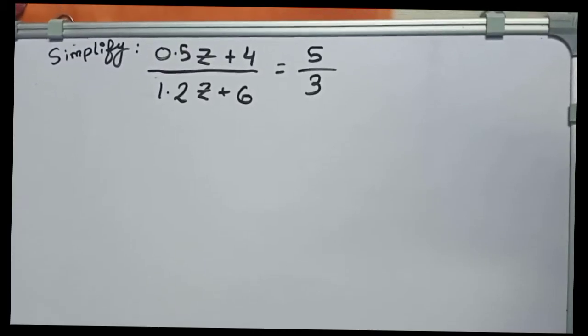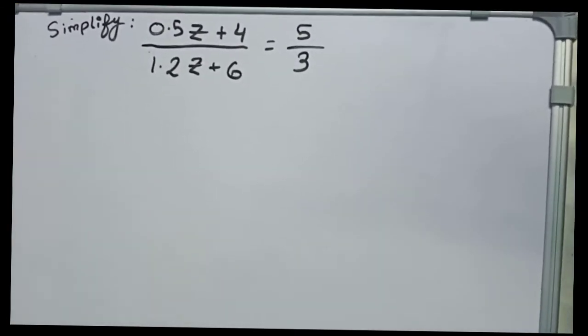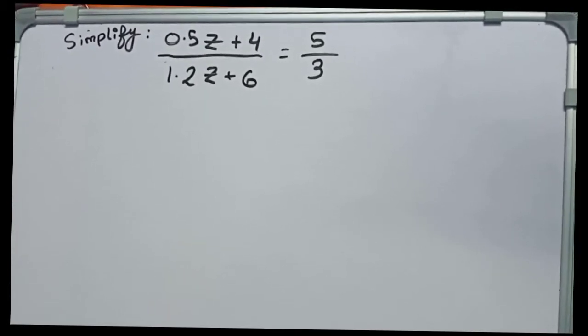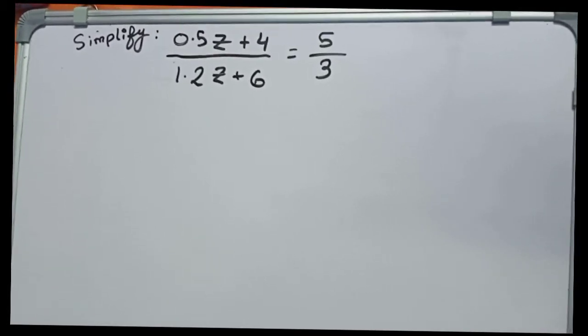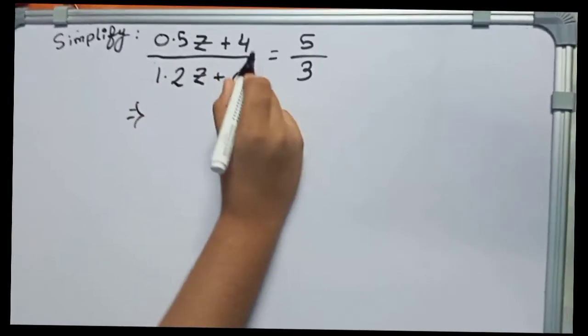Welcome to this video. In this video, our question is simplify 0.5z plus 4 by 1.2z plus 6 equals to 5 by 3. Let's start. We will do the cross multiplication first with this number and this.